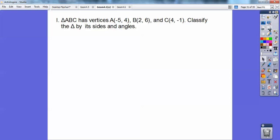Triangle ABC has vertices at (-5, 4), (2, 6), and (4, -1). Classify the triangle by its sides and angles. So I want to know, first of all, by the sides, is it scalene, isosceles, or equilateral?